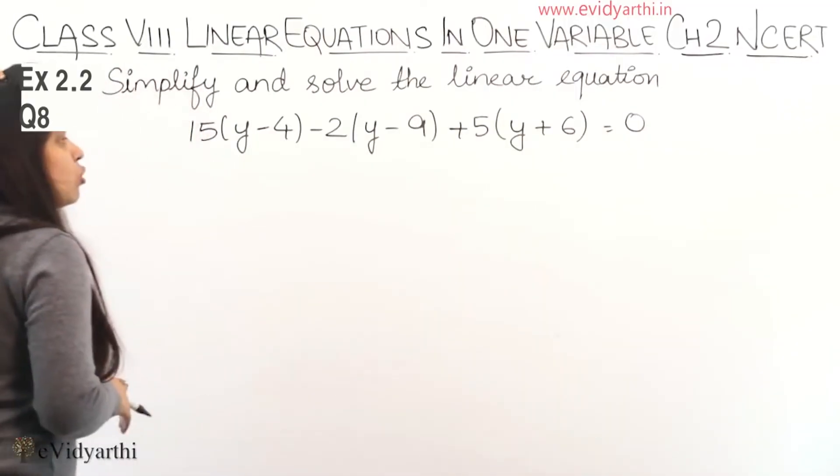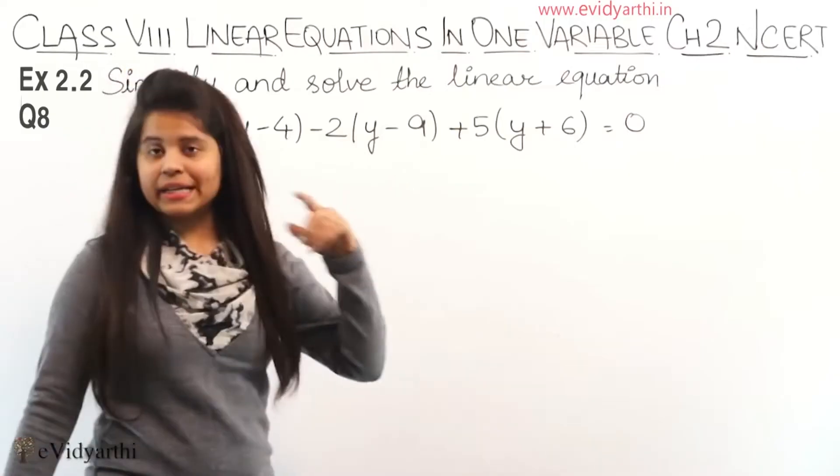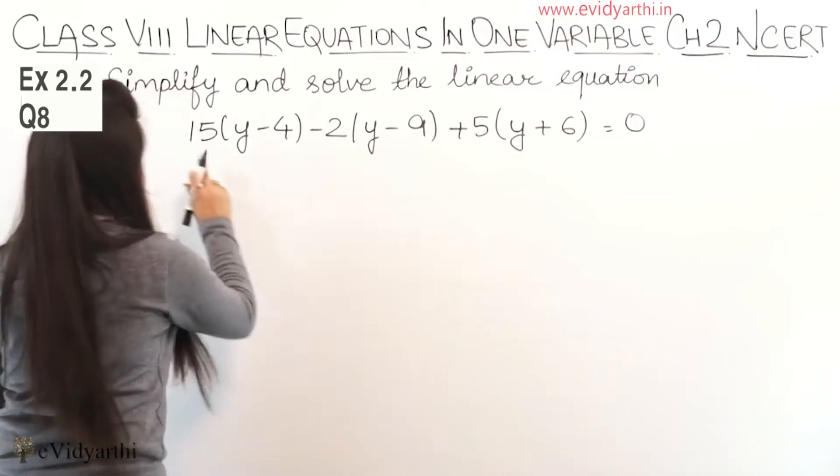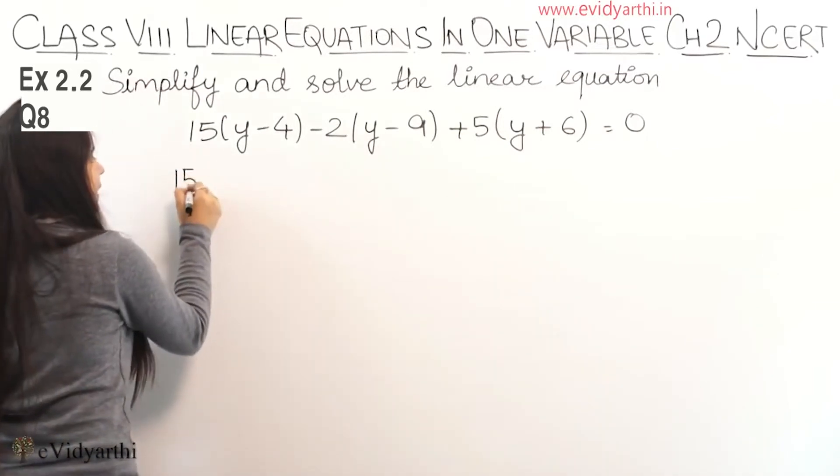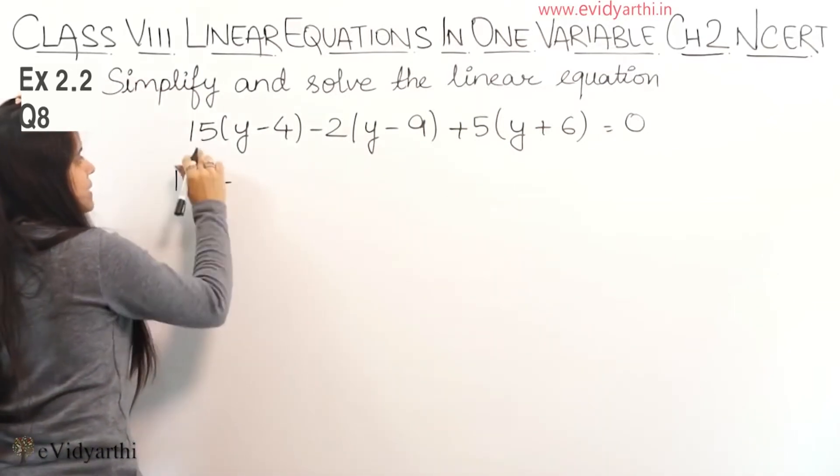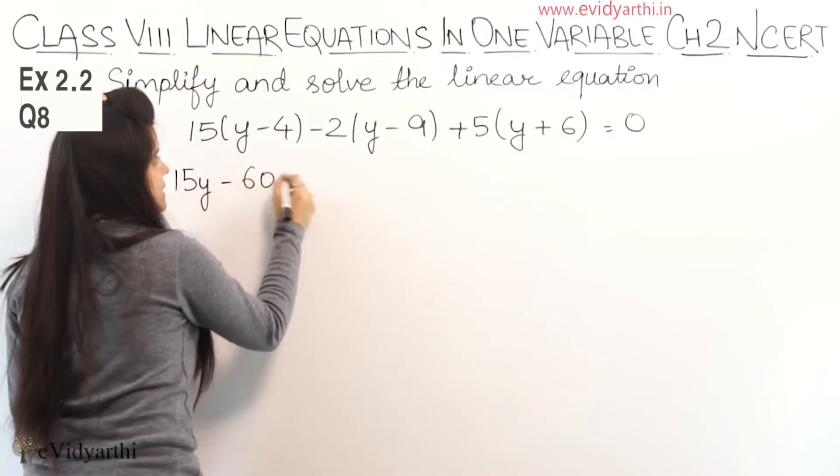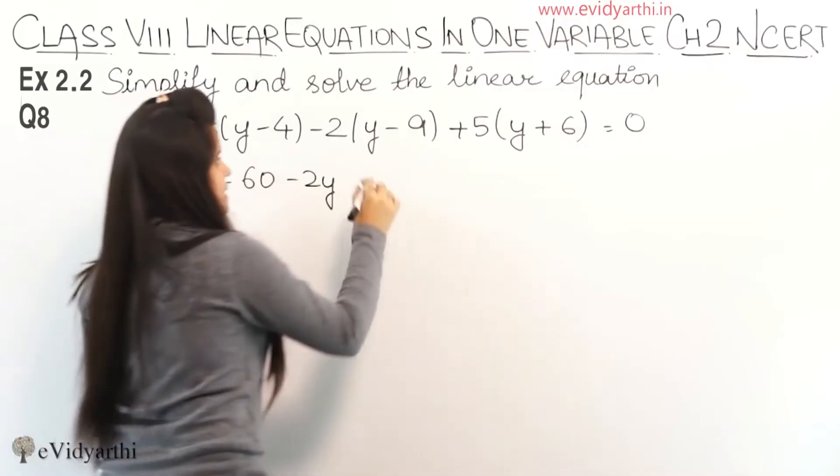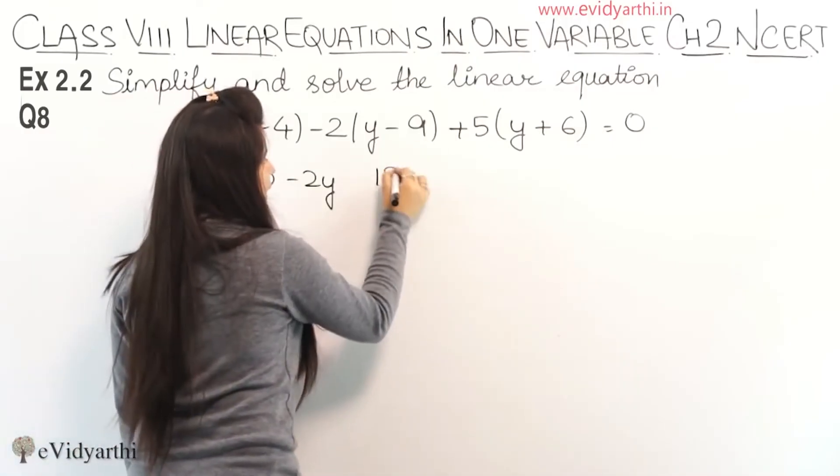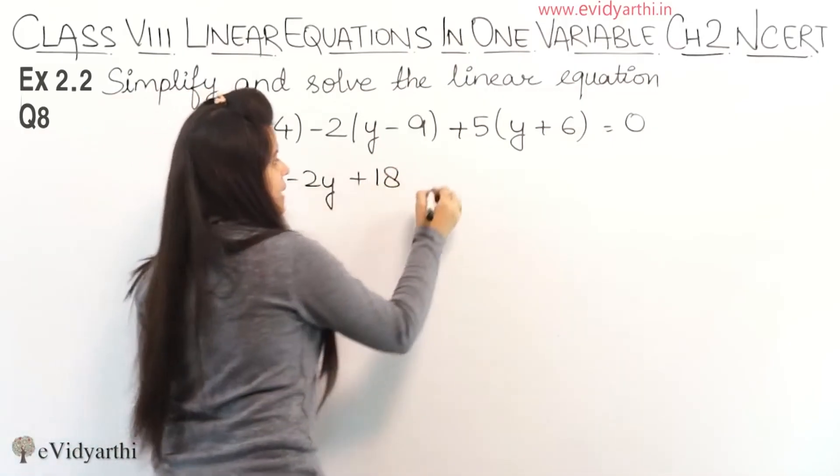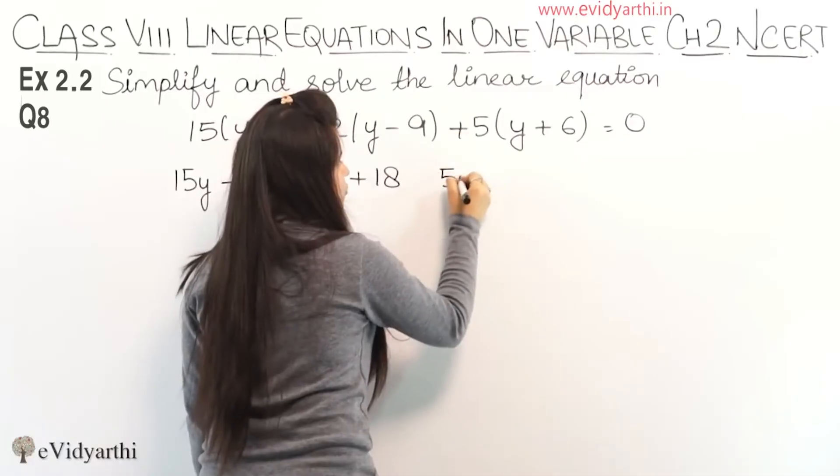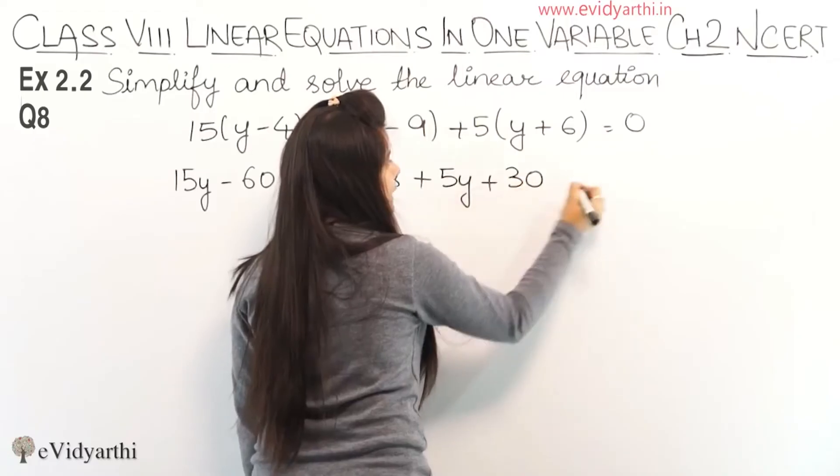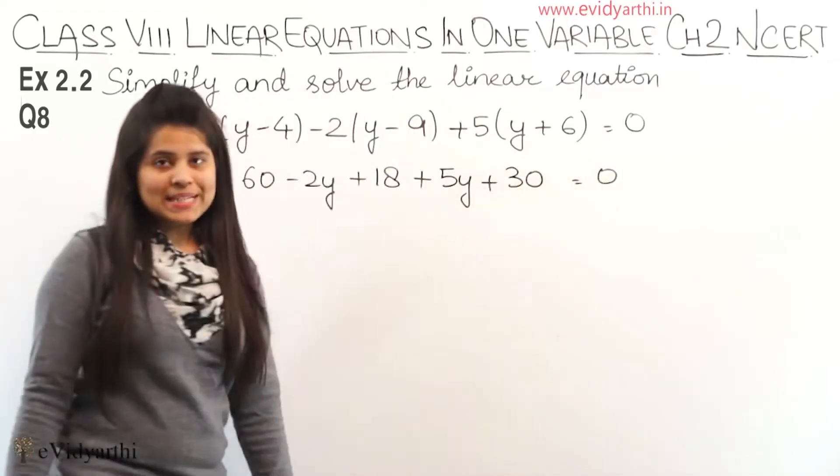We will solve this equation. The outer number multiplies with the numbers inside. So 15 into y: 15y, minus 15 into 4: 60. Minus 2 into y: 2y, plus 2 into 9: 18. Plus 5 into y: 5y, plus 5 into 6: 30, equals to 0.